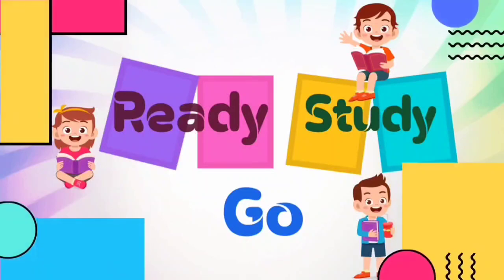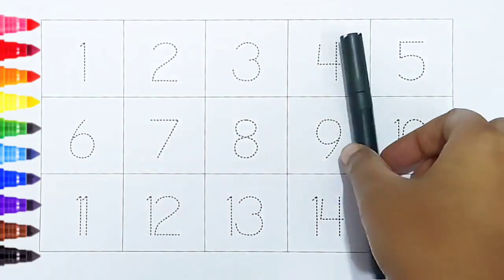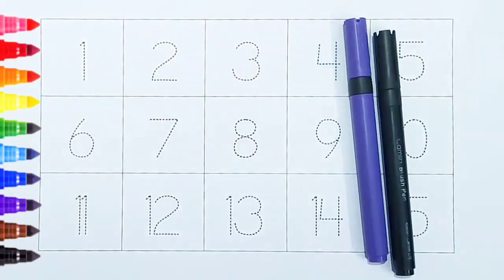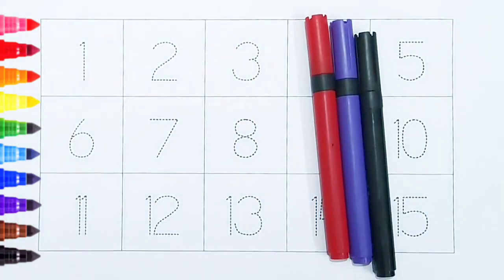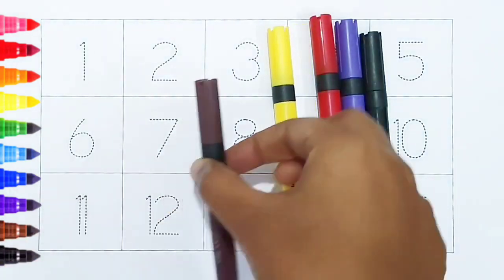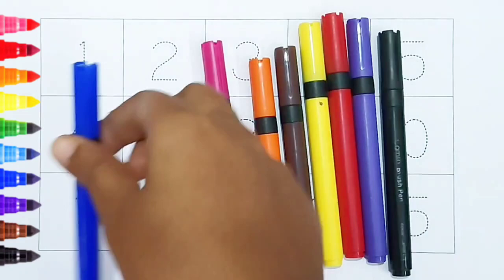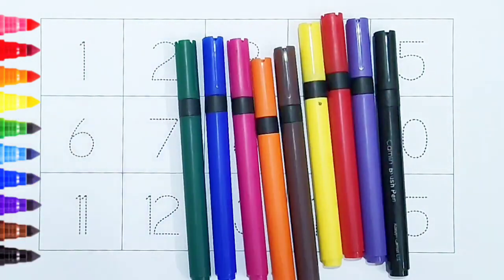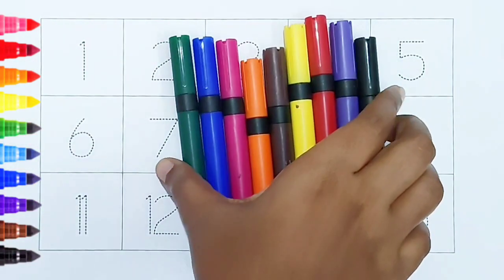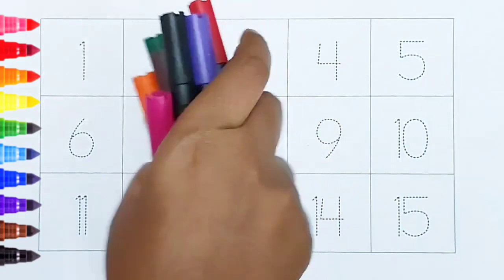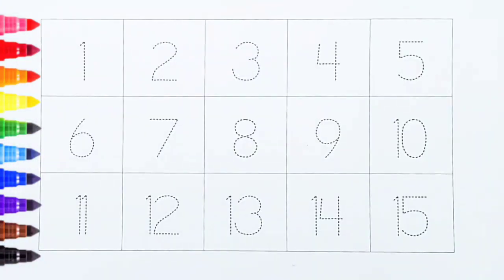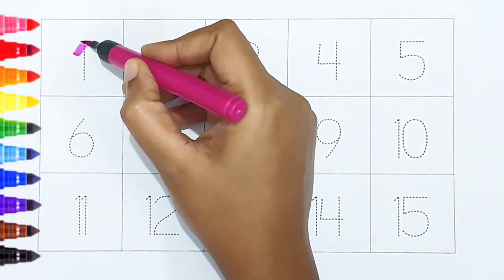Ready, study, go! Black color, white color, red color, yellow color, brown color, orange color, pink color, blue color, green color. Hi kids, today we can learn the numbers from 1 to 15. Let's begin!